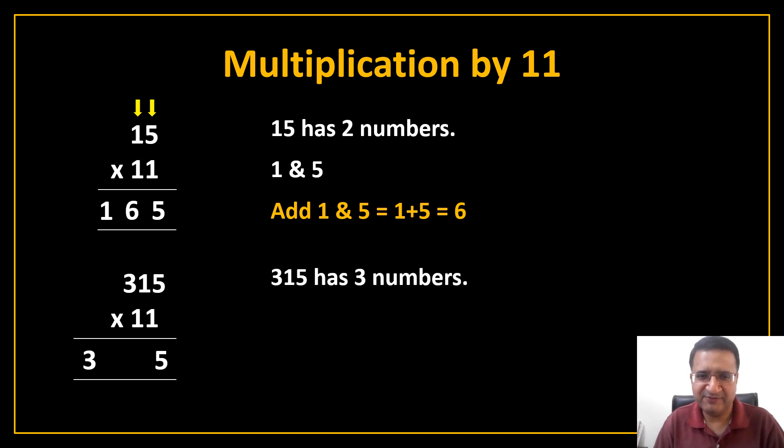Now 315 has 3 numbers. What are those 3 numbers? 3, 1 and 5. You can clearly see it on the screen. Now add 1 and 5, last 2 digits. You get answer 6. Insert 6 here. Then add first 2 digits, 3 and 1. You get 4. Insert 4 here and you get your answer.